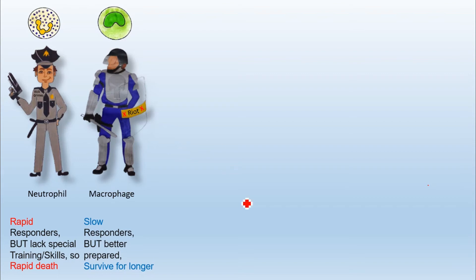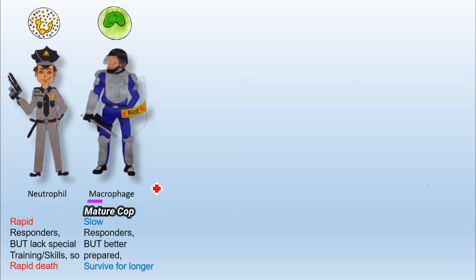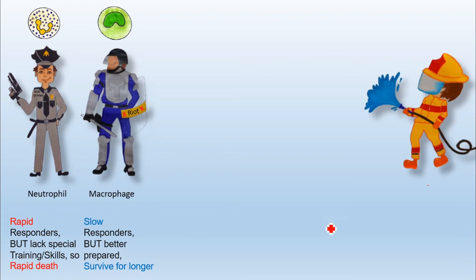Another way to memorize the difference: 'Neu' sounds like 'new,' so neutrophils are like a new, naive cop, while 'Ma' in macrophage stands for mature, so macrophages are like a mature cop. Using this pattern, you can easily relate these cells to their functions.